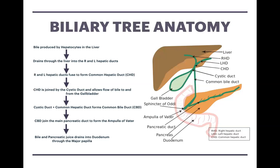Let's first start by discussing the anatomy of the biliary tree. The gallbladder sits within the gallbladder fossa, which is located on the liver bed. Bile is produced by hepatocytes in the liver. The bile produced within the liver drains through bile canaliculi and then drains into the right and left hepatic ducts. Once it leaves the liver, the right and left hepatic ducts fuse together to form the common hepatic duct, the CHD. That then fuses with the cystic duct, which comes directly from the gallbladder itself, allowing bile to enter and leave the gallbladder. Further down, the two fuse together to form the common bile duct, the CBD.